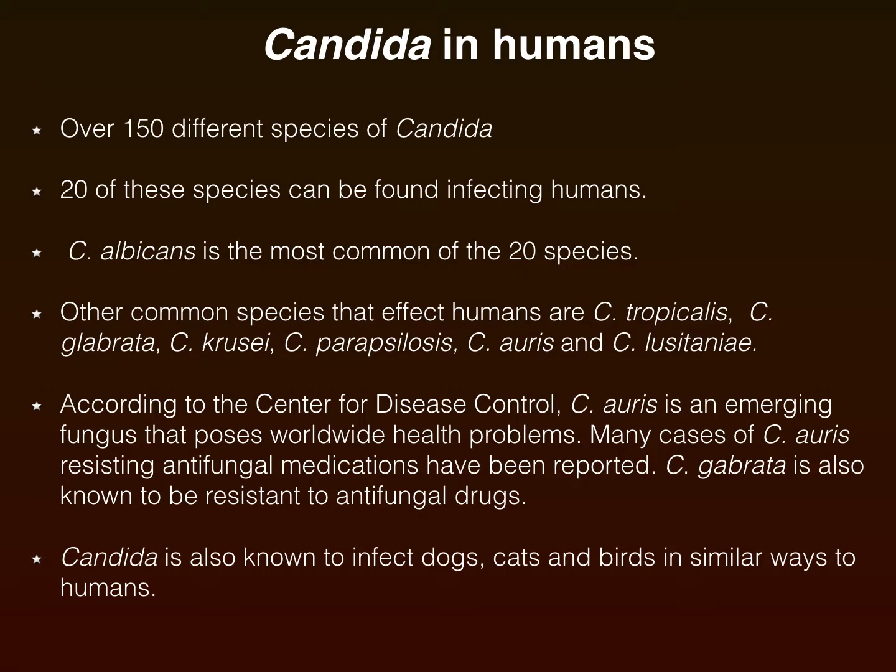There are over 150 different species of Candida known to man, and 20 of these species can commonly infect humans. Of these, Candida albicans is most commonly found. Other common species affecting humans include Candida tropicalis, Candida glabrata, Candida krusei, Candida parapsilosis, Candida auris, and Candida lusitaniae.